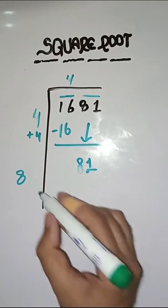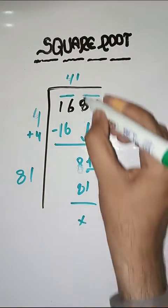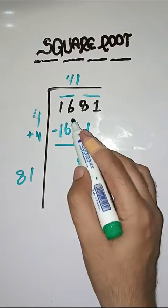Eighty one ones are eighty one. So completely solve ho chuka hai. So square root of 1681 is 41.